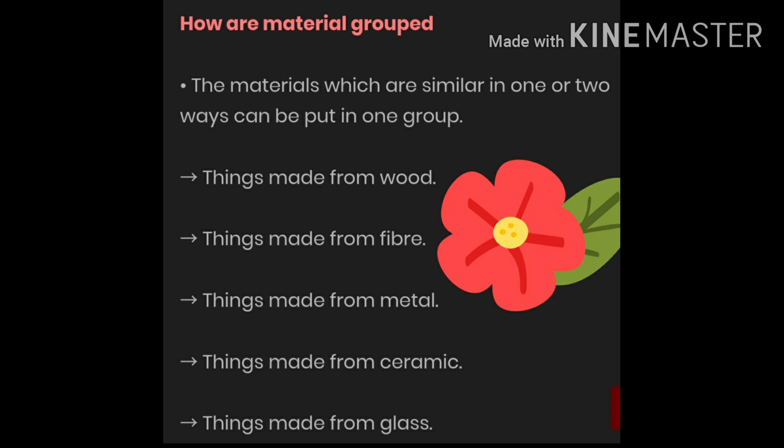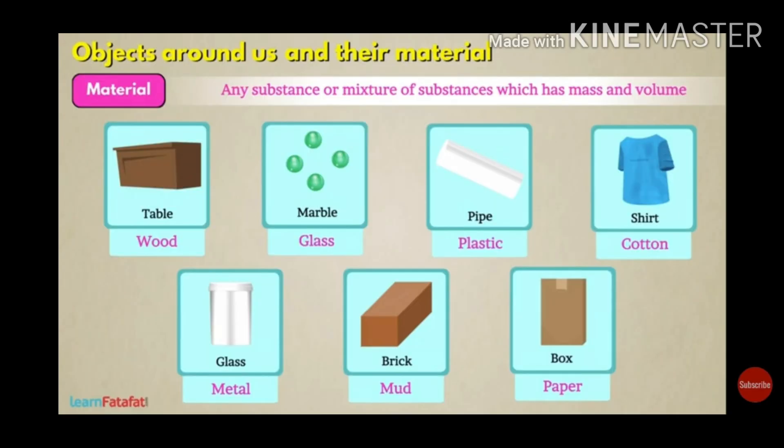Materials that are similar in one or two ways can be put in one group. Materials can be classified as things made up of wood, fiber, metal, ceramic, or glass. They are made in such a way because their uses are different. Depending upon the uses, we select the material to make different types of objects in our daily life.